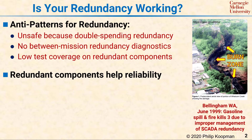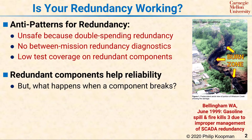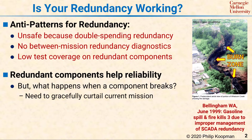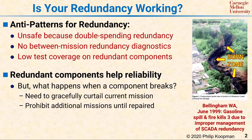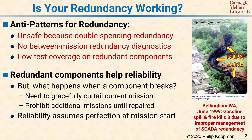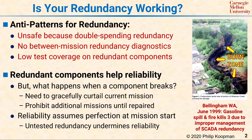Properly designed redundancy improves reliability and availability, but it is important to consider what will actually happen when a component breaks. There will be a need to detect the fault and then gracefully curtail the current mission. The system will most likely need to prohibit the start of a new mission until broken components can be repaired. Reliability math assumes that all redundant components are working perfectly at the start of a mission, and any untested redundancy undermines the reliability of the system.